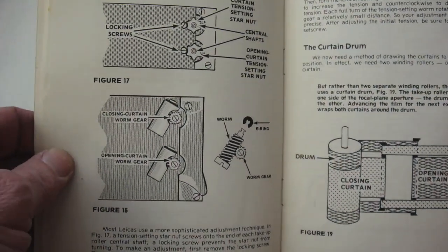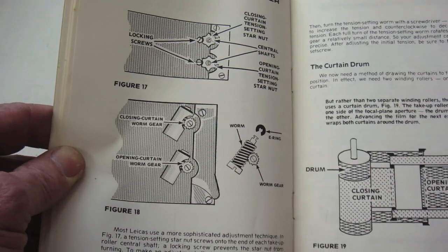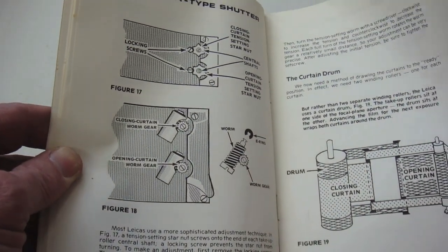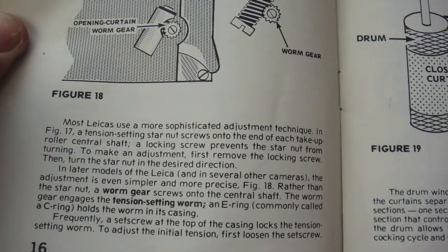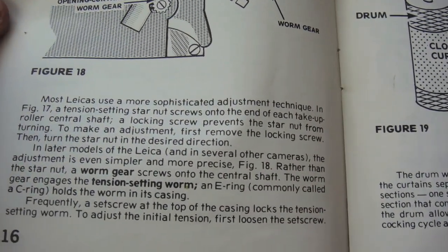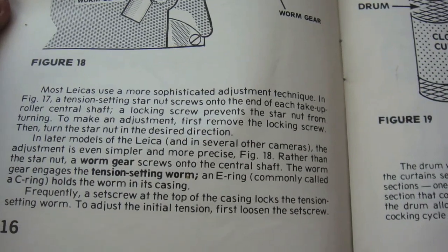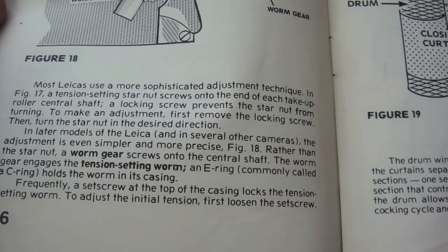However, it has a glaring omission of this adjustment procedure for M-Series cameras. It does cover the star wheel adjustment similar to the M5, or the worm gear adjustment of earlier Leicas.